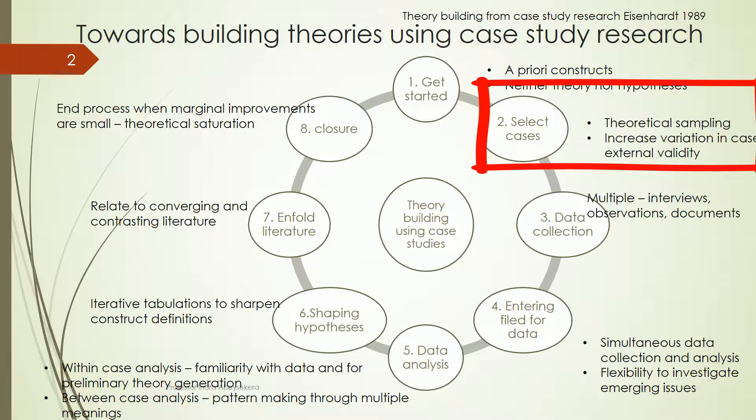The second step is to select cases to build a theory. At that stage, one must follow the grounded theory approach and use theoretical sampling or purposive sampling to maximize the relevant observations to build a theory. We must attempt to increase the variation in cases so that the findings could support external validity.